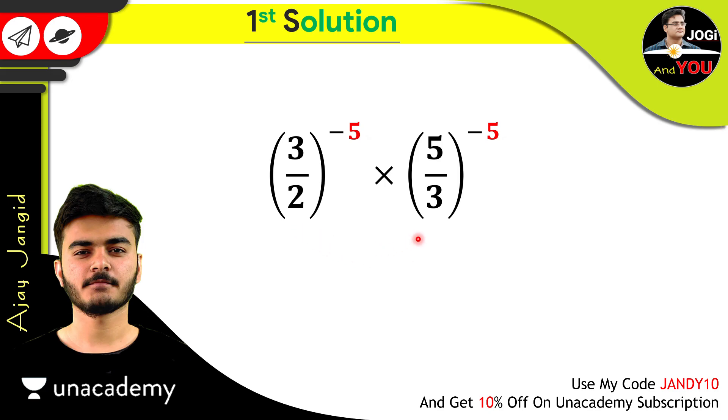And now, you know very well if we have 2 different bases and the power of both of them is same, then you can take the power as common. Just like this. Here, the 3 will be cancelled out with 3. And it will be something like this. 5 upon 2 to the whole power minus 5. Here, the power is in minus. And we know very well if we want to convert this negative power into the positive power, just reciprocal this bracket just like this. And if there's anything in the bracket and it has a power, then the power will be applied on everything in the bracket just like this.